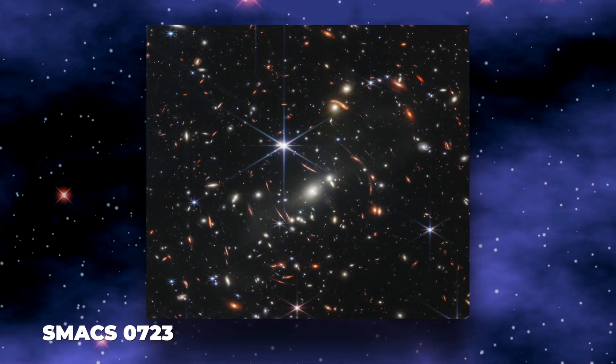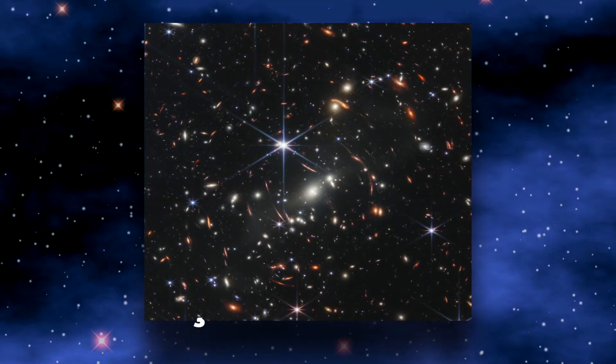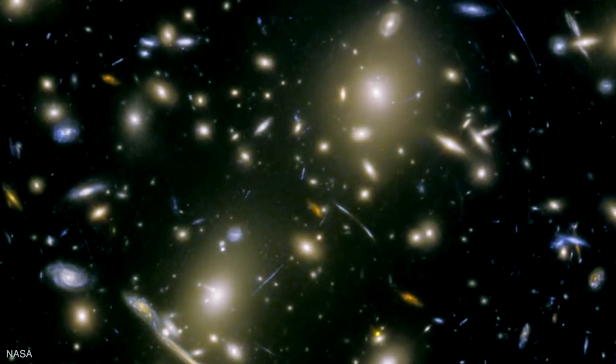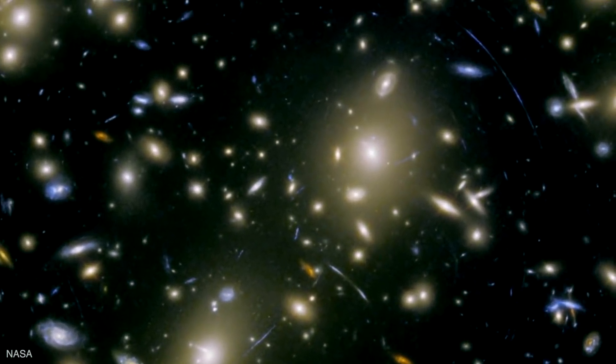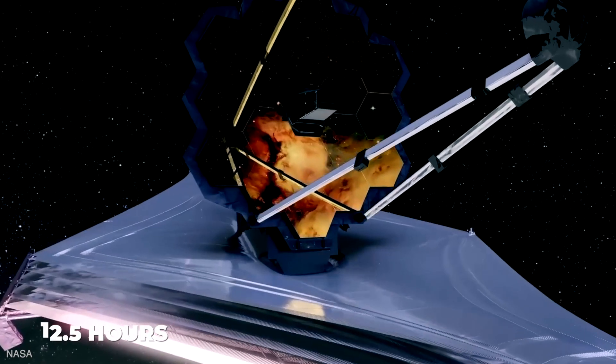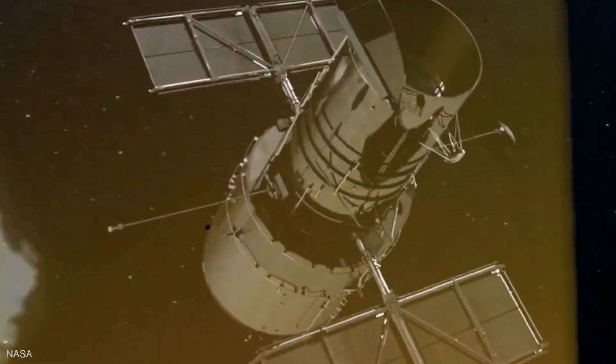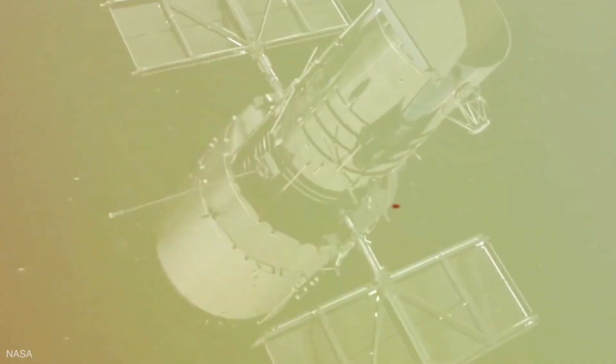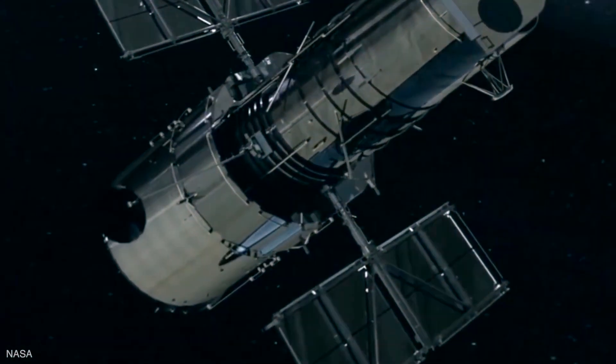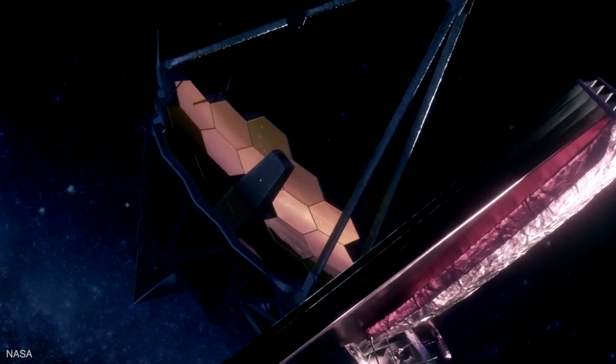SMACS 0723, also known as Webb's first deep field, is like a cluster of various galaxies. Webb compiled the bits and pieces of the shot in just 12.5 hours, which is relatively faster than its predecessor, Hubble Space Telescope, which could have taken weeks to do the same work. Therefore, it shows how powerful this telescope is.